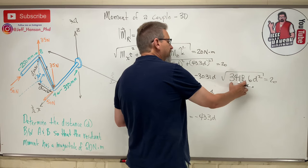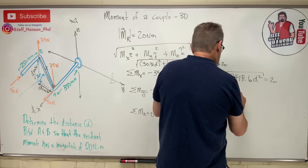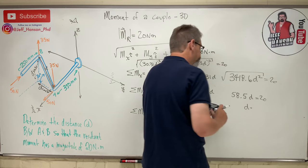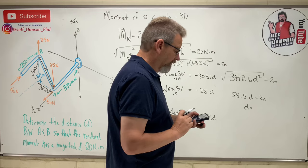So d equals 20 divided by that, which equals 0.342. And what is the units here? The units on this...